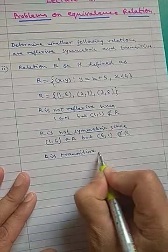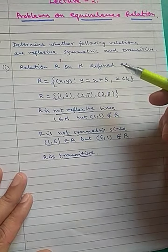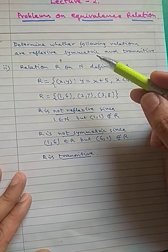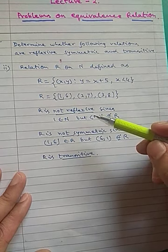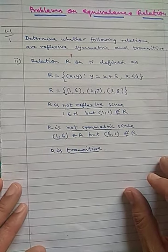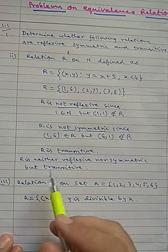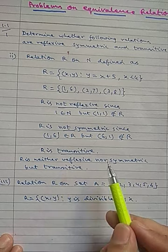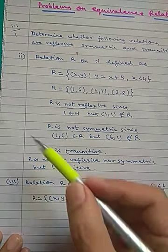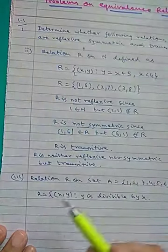So for this question: R is not reflexive, R is not symmetric, but R is transitive. R is neither reflexive nor symmetric but is transitive. This completes question 1 part 2.